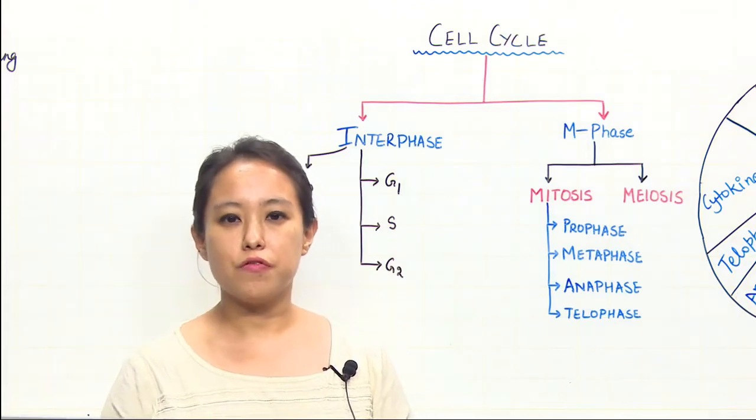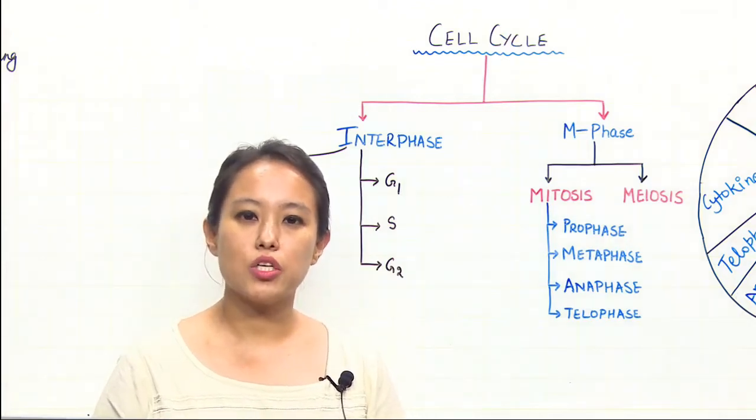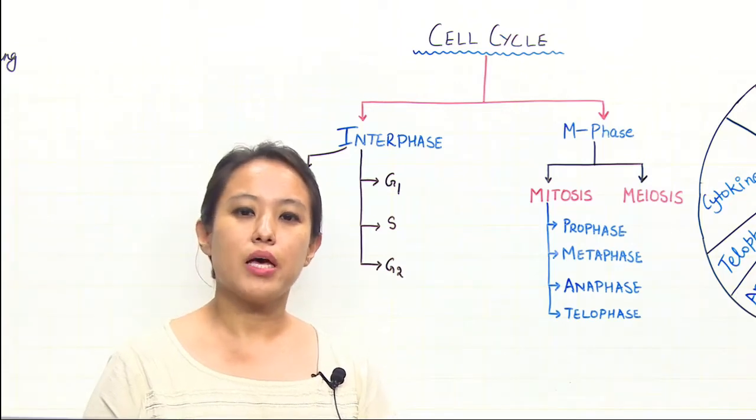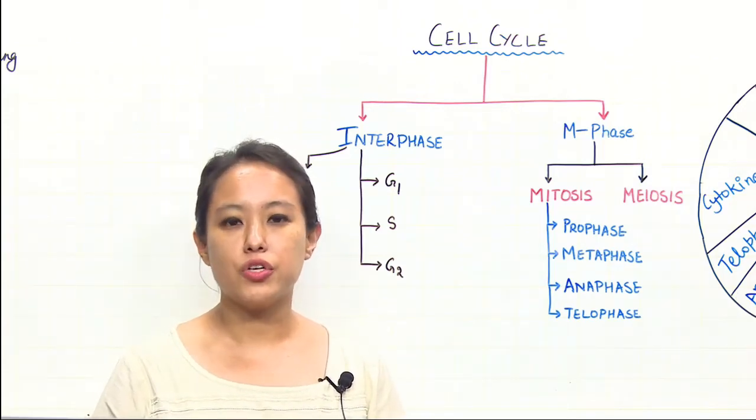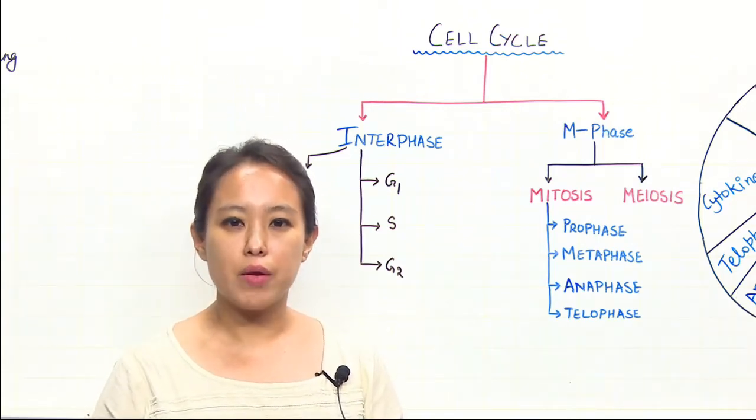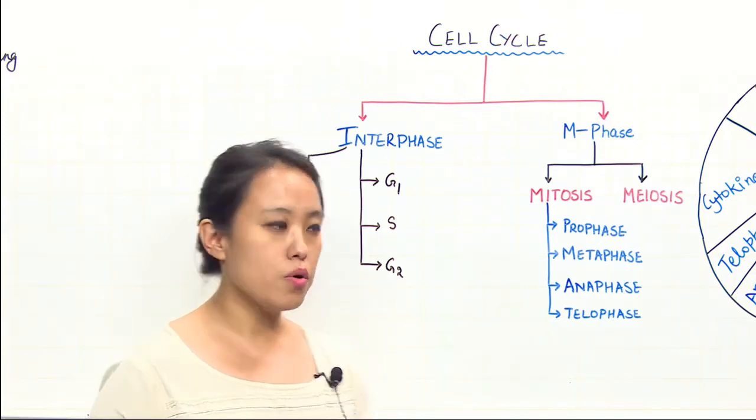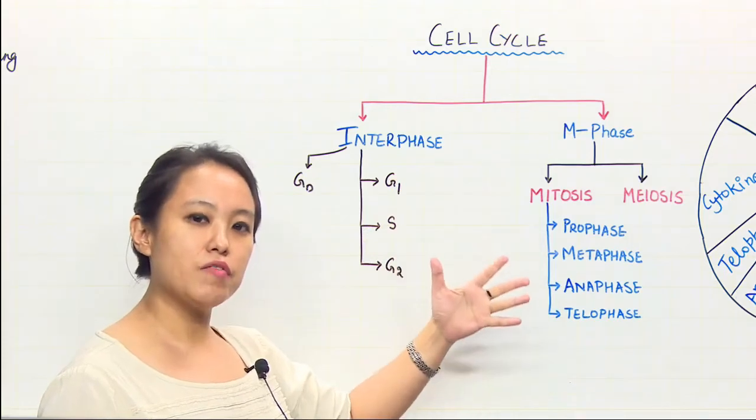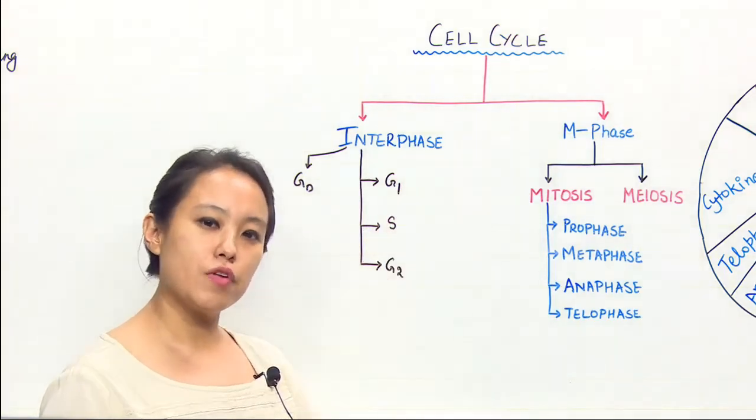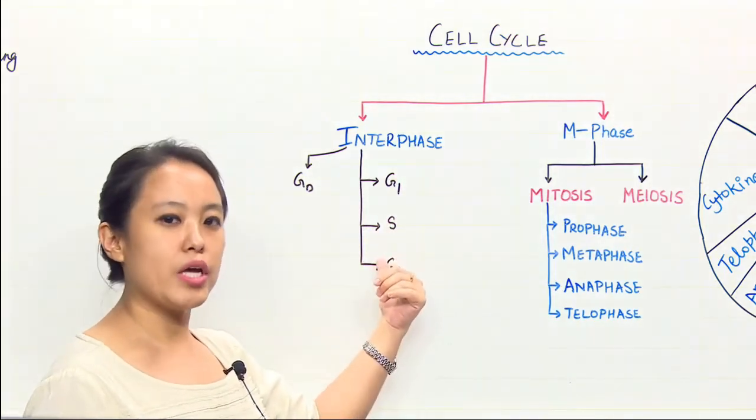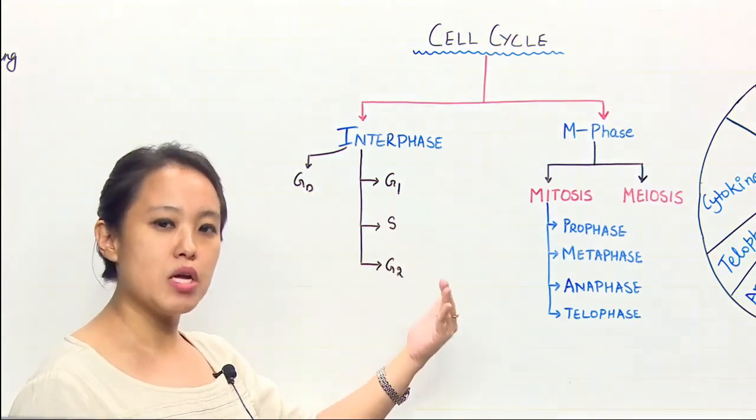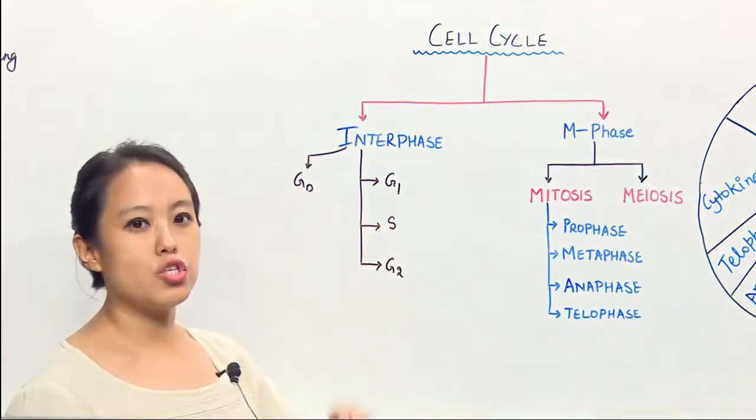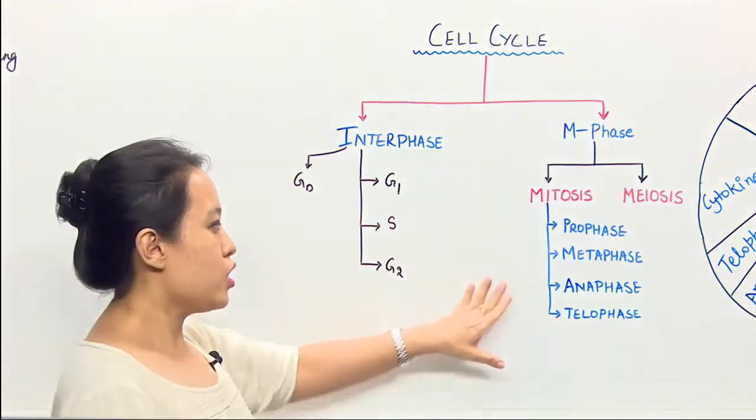G0 phase is actually known as the quiescent phase. Say for example, if a tissue undergoes injury or meets some unfavorable conditions, when any cell is dividing in G1 phase under unfavorable conditions, it will not enter S phase. In fact, it will immediately go to a dormant stage which is known as G0 stage.